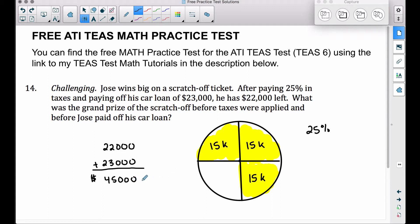Now if we take this $45,000 and we break it up into three pieces, because we said this $45,000 is 75% of what he won, because he had to pay 25% in taxes. So I'm taking $45,000 and I'm breaking it up into three pieces because these three pieces represent 75%. If we take $45,000 and divide it by three, we get $15,000 in each one of these.